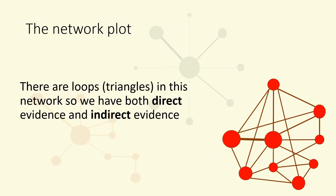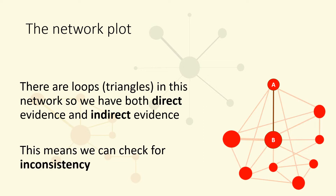If there are loops in the network, this allows us to check if the direct and indirect estimates are in conflict, known as inconsistency. There are loops or triangles in this network, so we have both direct evidence and indirect evidence. For example, we have direct evidence from trials on the comparison between A and B, and the trial evidence from the rest of the connected network provides indirect evidence on the comparison between A and B. This means we can check for inconsistency.